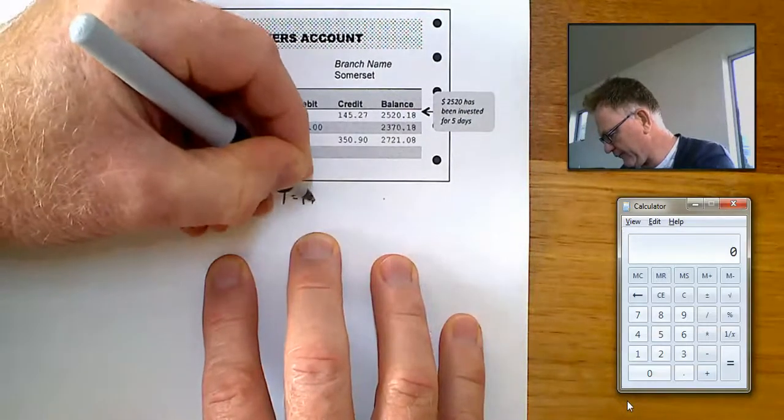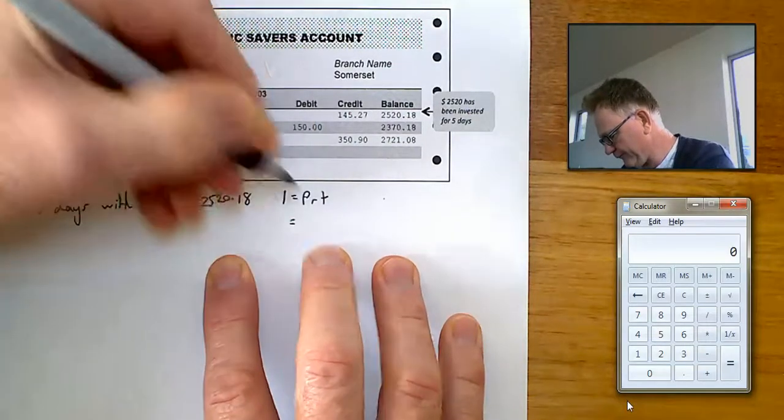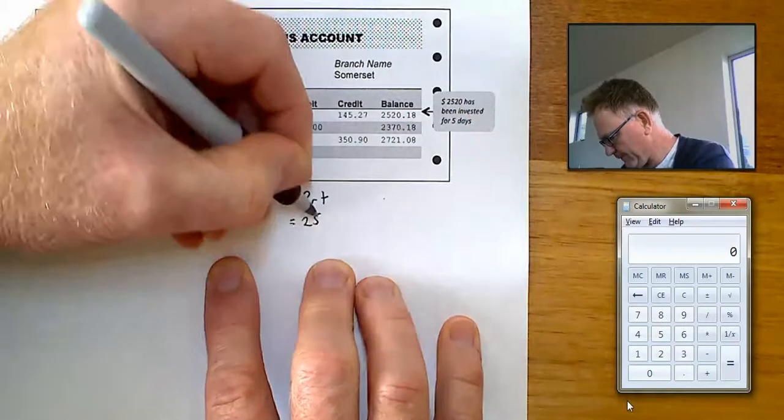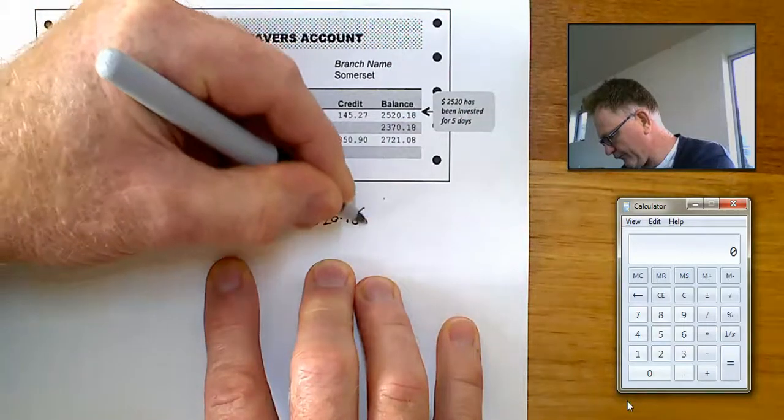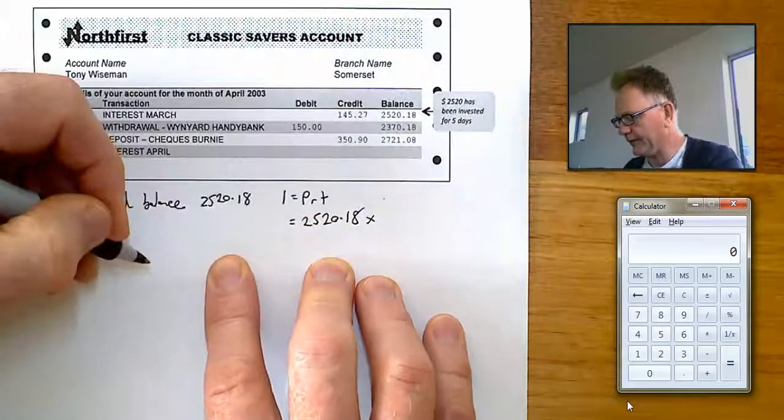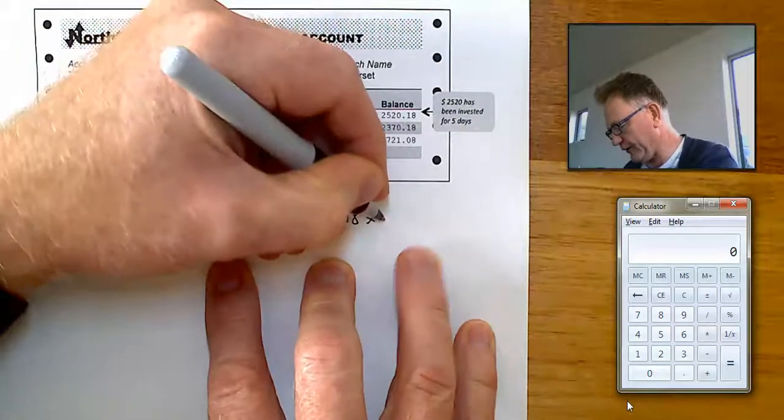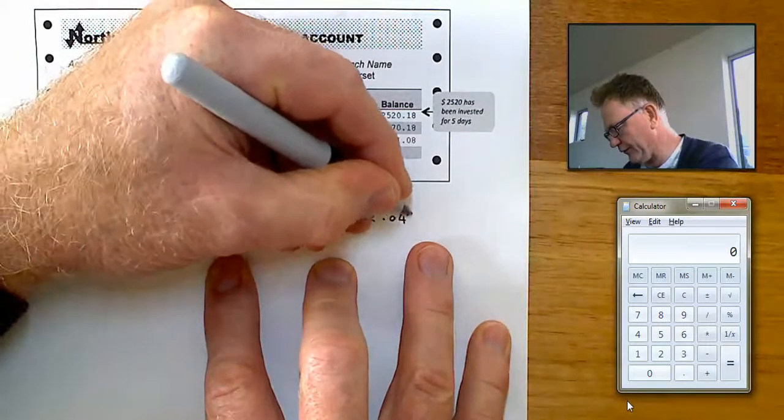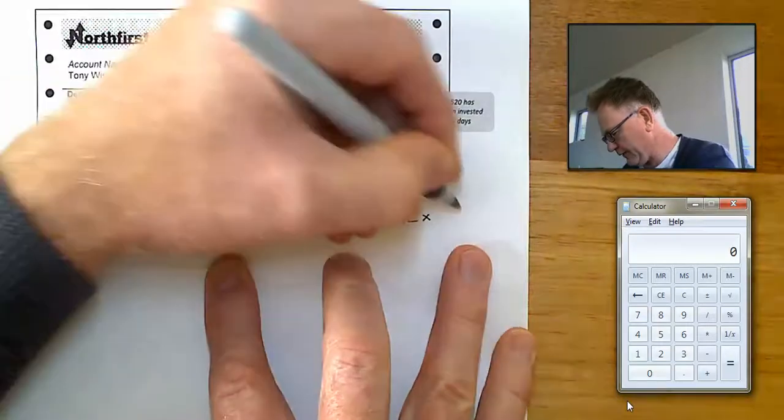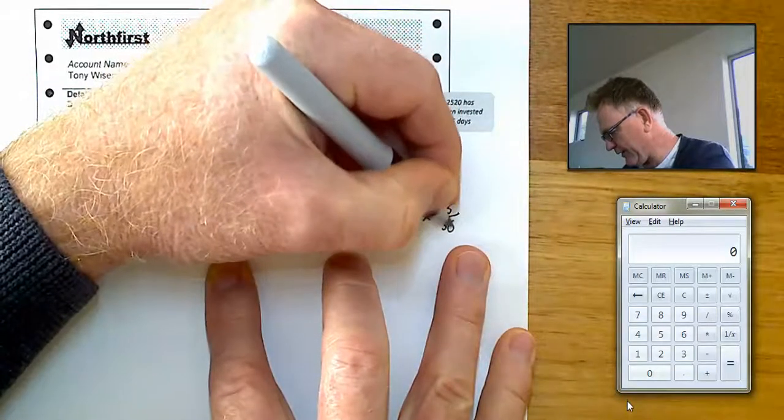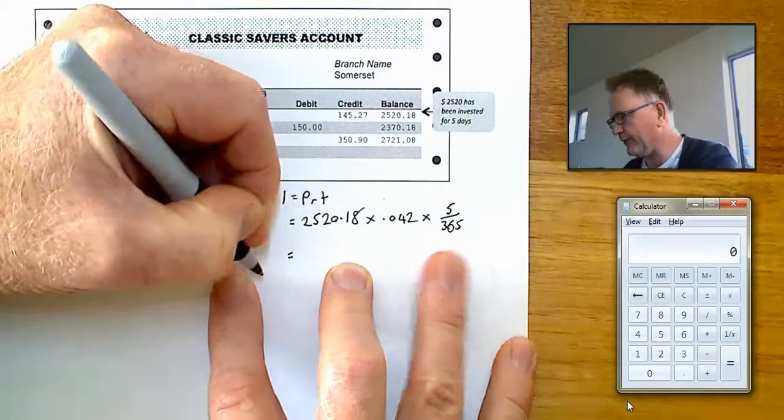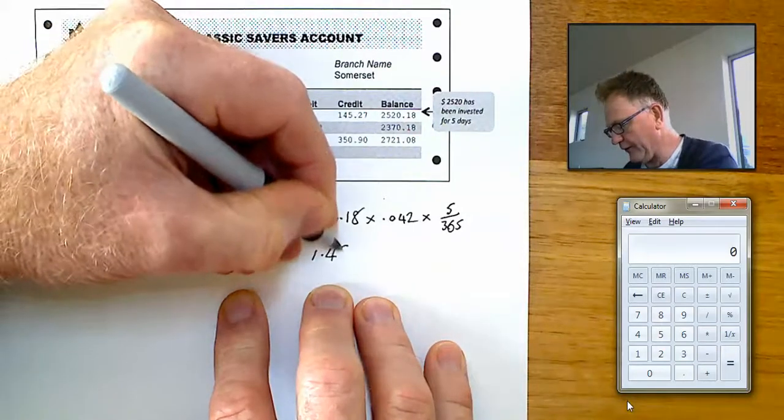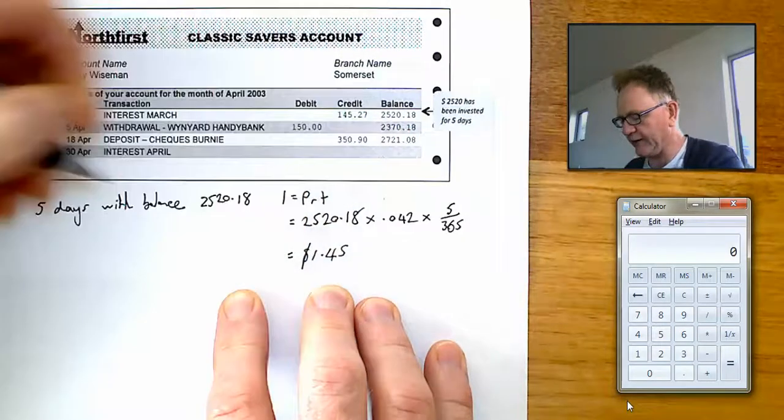I equals PRT. Interest rate in this example is 4.2%. I'll write that as .042 as a decimal. Five out of 365 days. Works out for that period of time, a $1.45 interest if you do the calculations.